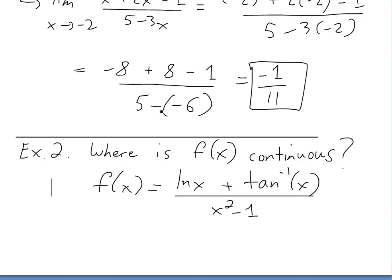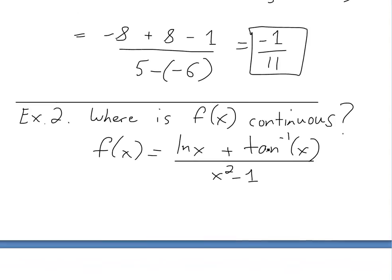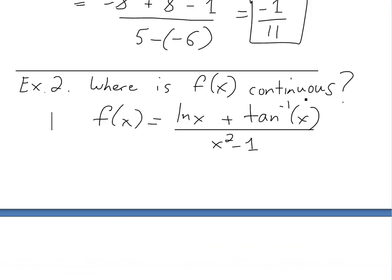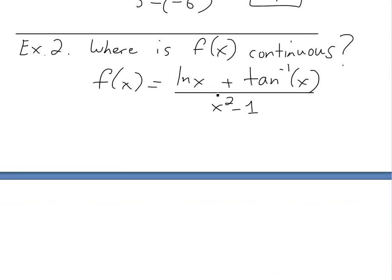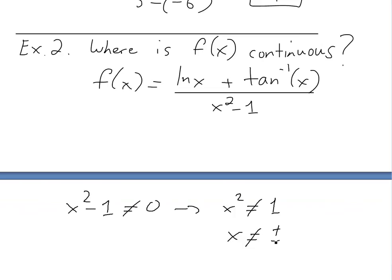Now let's move on to example 2: where is f(x) continuous, given f(x) = ln(x) + arctan(x), all divided by x squared minus 1? To find where it's continuous, we look at where the function is first defined. Since it's divided by x squared minus 1, we need x squared minus 1 not equal to 0, meaning x squared is not equal to 1, so x is not equal to plus or minus 1.